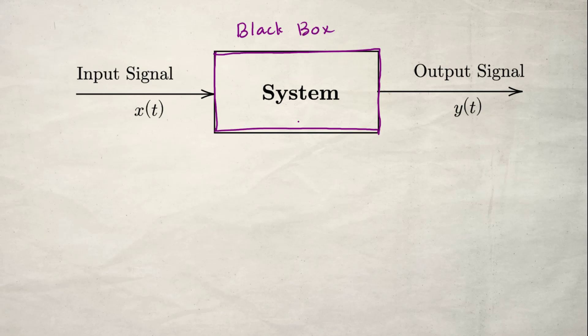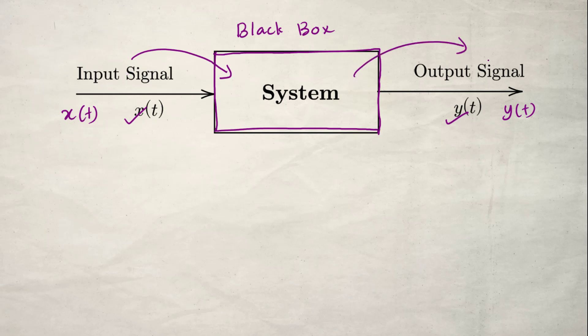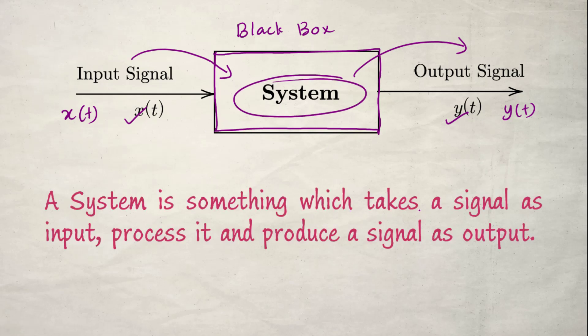In the black box representation, we are not much concerned about what is happening inside the system. We know that something is happening inside and the input signal is changed to the output signal. We normally use x(t) to represent the input signal and y(t) to represent the output signal. This signals and system can be mechanical, electrical, biomedical — it can be of any type — it should take an input signal and produce some output signal.